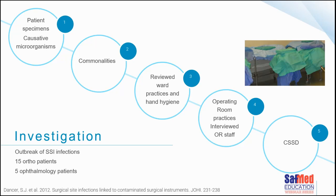They started to look at commonalities: what about the surgeries was common? Were the patients nursed in the same ward? Were they nursed by the same staff? Did they undergo similar procedure types? Were the surgeries conducted in the same operating theatre? Same theatre staff? Same room? Same anaesthetist? They reviewed ward practices and hand hygiene processes, then moved to the operating room. While interviewing operating room staff, the staff said they had noticed a lot of damp packs of late — packs that were damp and stained, with an increase in that occurrence.